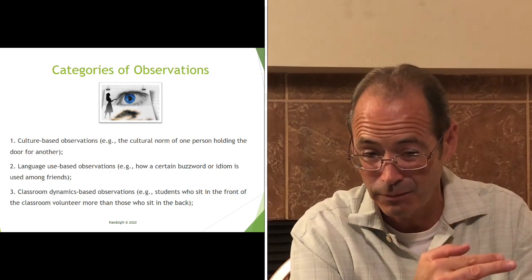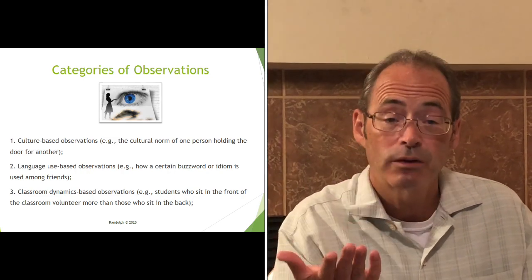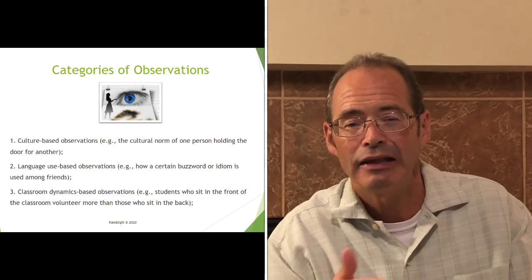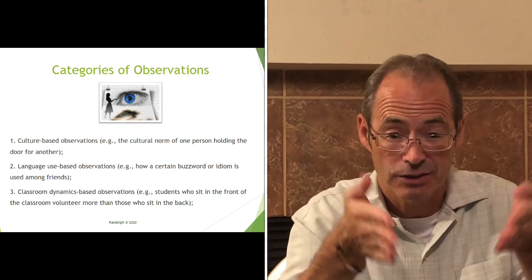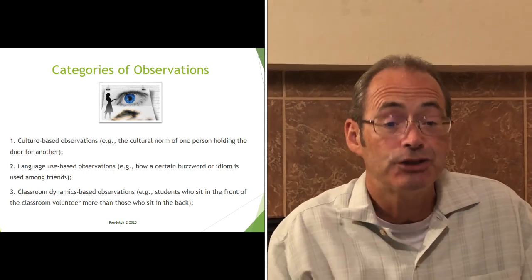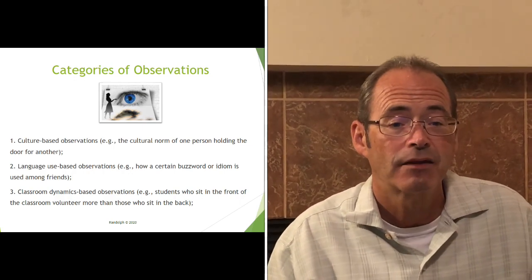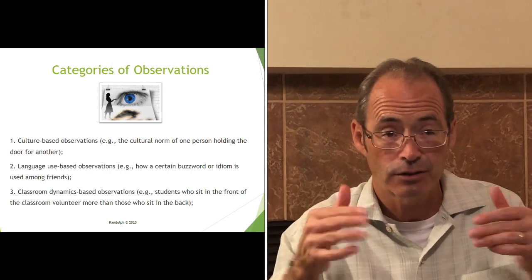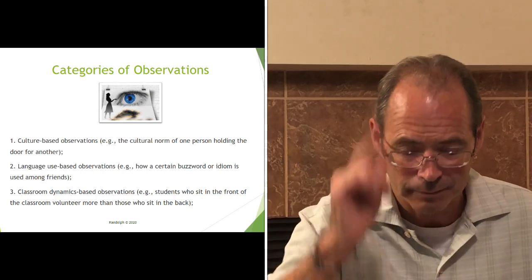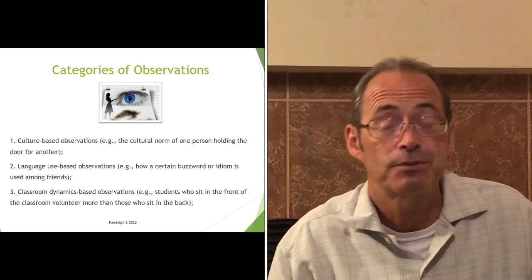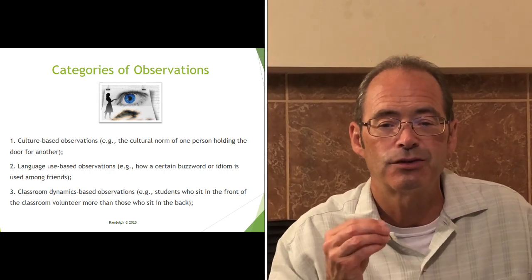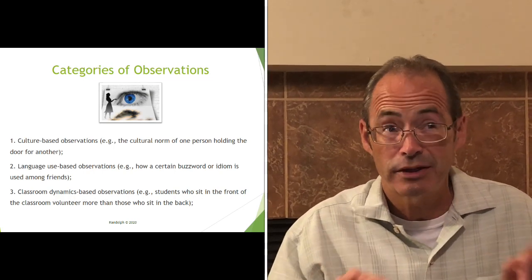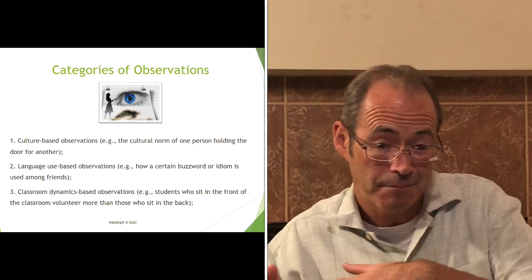Category one is culture-based observations — for example, the cultural norm of one person holding the door for another. Category two is language use-based observations — for example, how a certain buzzword or idiom is used among friends; one example was female students on campus using the term 'apparently.' Category three is classroom dynamics-based observations — one student observed that students who sit in the front of the classroom volunteer more than those who sit in the back. Another student observed that a particular professor was favoring the left side of the room over the right.